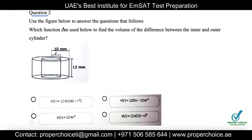Question two says: use the figure below to find which function can be used to find the volume of the difference between the inner and outer cylinder. We need to find the volume of the space between the inner and outer cylinders. To do this, find the volume of the outer cylinder minus the volume of the inner cylinder.